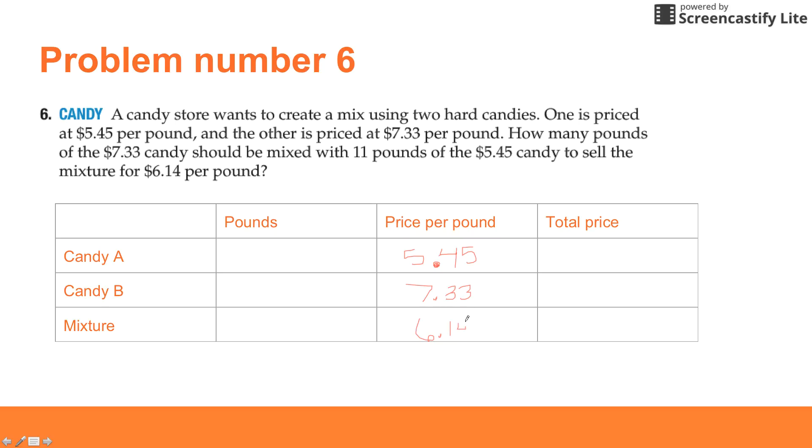Finally, our mixture is going to sell for $6.14 per pound. Now let's talk about the pounds. It says how many pounds of the $7.33 candy - well that means we don't know how many pounds of the $7.33 candy, so that's going to be our variable X. But we're mixing it with 11 pounds of the $5.45 candy, so that's going to be 11 pounds. If we have 11 pounds of Candy A and X pounds of Candy B, that means we have 11 plus X pounds of the mixture, or X plus 11.